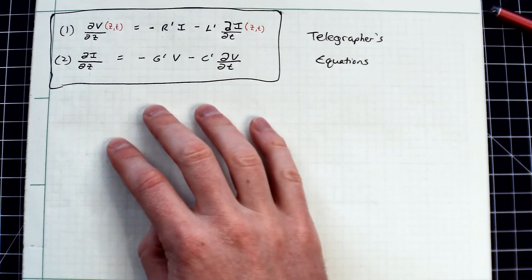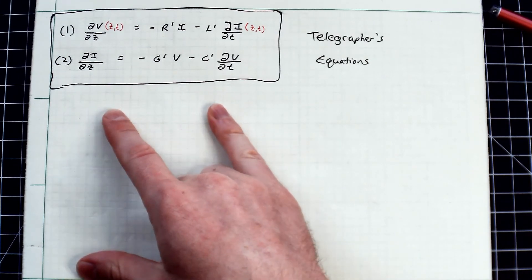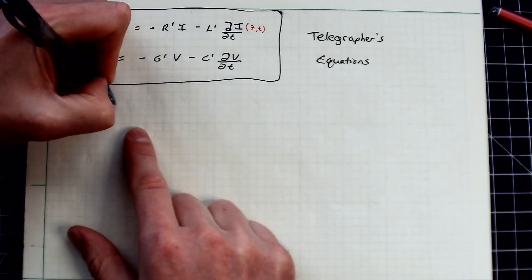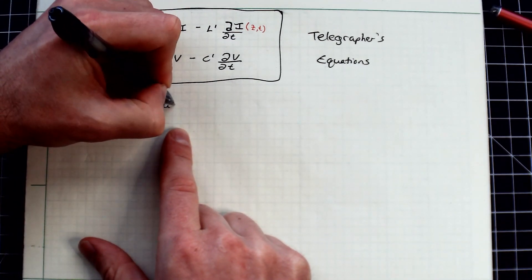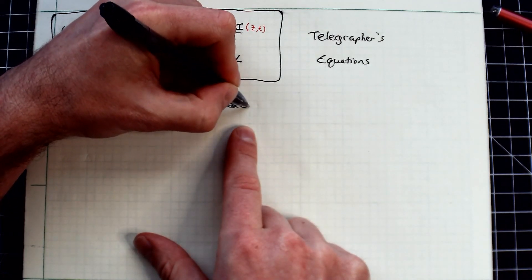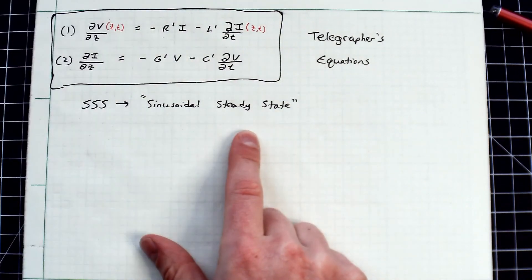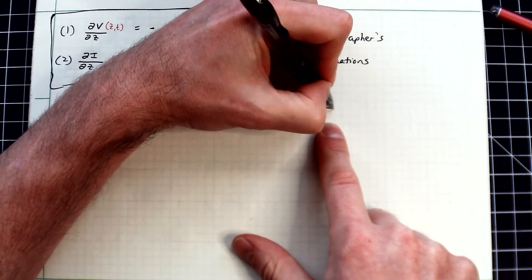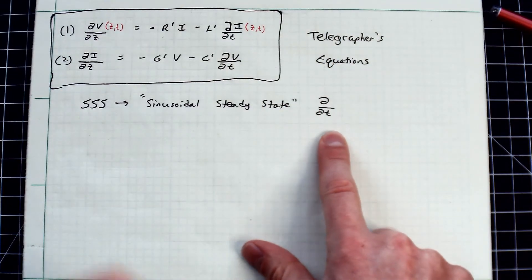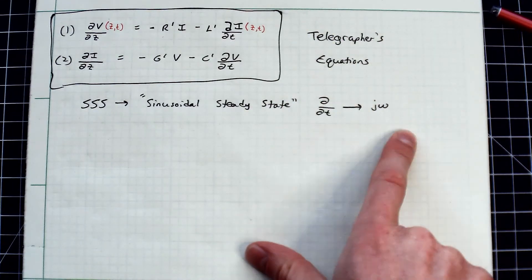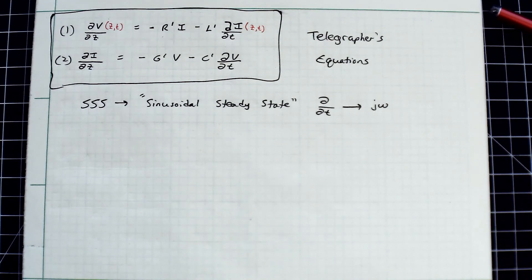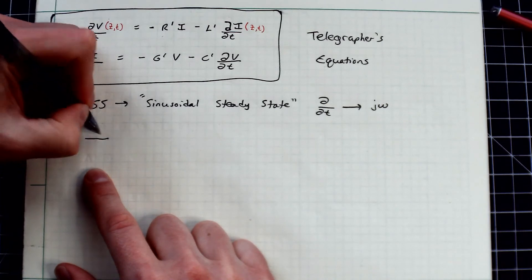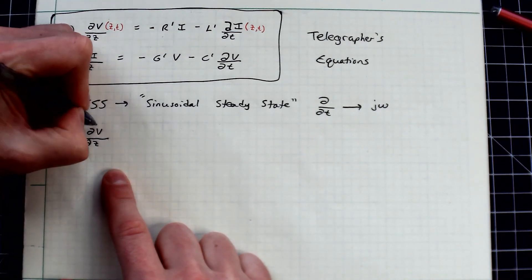We could leave things as is, but what we really care about is sinusoidal steady state — SSS. This is a very important condition. In sinusoidal steady state, every time you see a partial derivative with respect to t, that turns into j-omega. So the two time derivatives in our equations both become j-omega, and we rewrite the equations with a tilde on V and I to indicate these are now phasors rather than time-domain expressions.